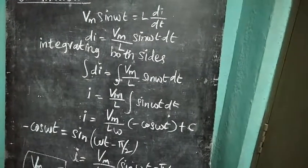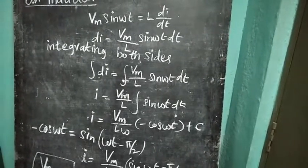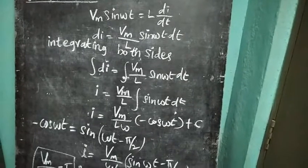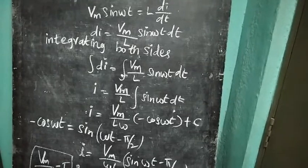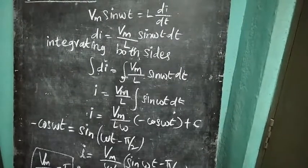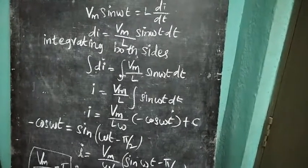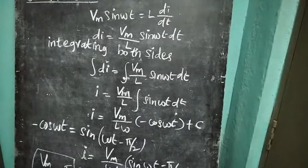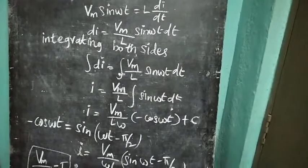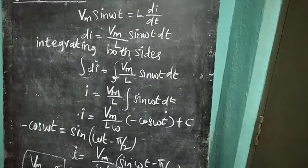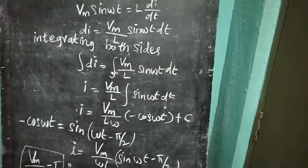Rearranging this equation: di equal to Vm by L sin omega t dt. Integrating both sides of the equation, we get the integral of di equal to the integral of Vm by L sin omega t dt. So the integral of di equals I, and Vm by L is a constant taken outside the integration. Finally, we obtain I equal to Vm by L omega minus cos omega t plus C.